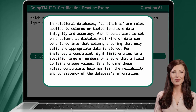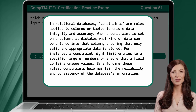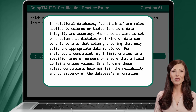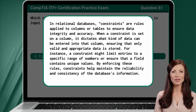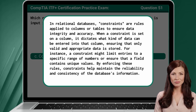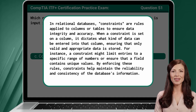In relational databases, constraints are rules applied to columns or tables to ensure data integrity and accuracy. When a constraint is set on a column, it dictates what kind of data can be entered, ensuring that only valid and appropriate data is stored. For instance, a constraint might limit entries to a specific range of numbers or ensure that a field contains unique values. By enforcing these rules, constraints help maintain the reliability and consistency of the database's information.